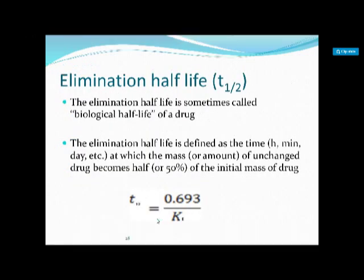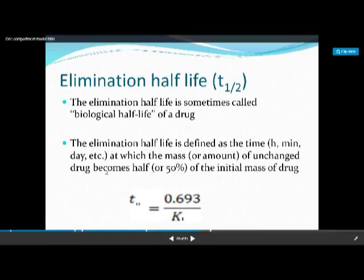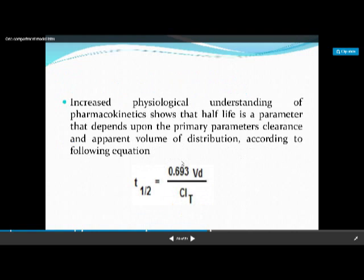The elimination half-life is the time at which the amount of unchanged drug reduces to 50% of the initial amount. For a first order reaction: t½ = 0.693/k. Pharmacokinetic understanding shows that half-life depends on the primary parameters clearance and apparent volume of distribution, according to the equation: t½ = 0.693 × Vd / CLt.